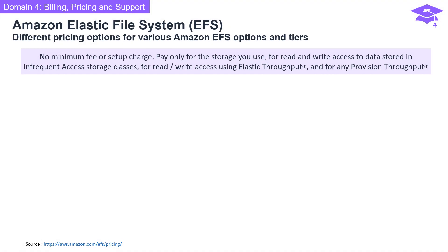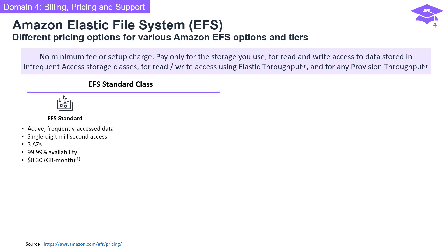Amazon EFS offers various pricing tiers with no minimum fee or setup charge. You pay only for the storage you use, for read and write access to data stored in infrequent access storage classes, and for any provisioned throughput. The EFS Standard class is designed for active, frequently accessed data with single-digit millisecond access time, available across three availability zones.